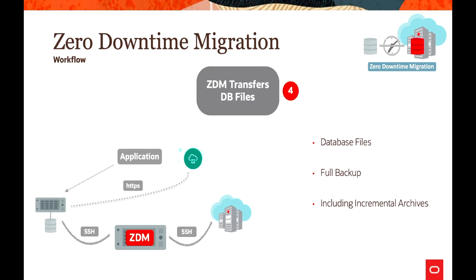ZDM will start transferring files from your source to object storage. These files include your database backup files, database files, and any incremental backups — all transferred to the object storage bucket. The communication uses HTTPS as the protocol, so it is secure, and the files reach the object storage bucket safely.